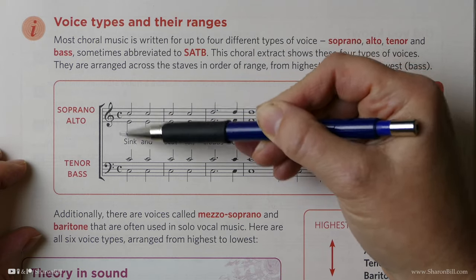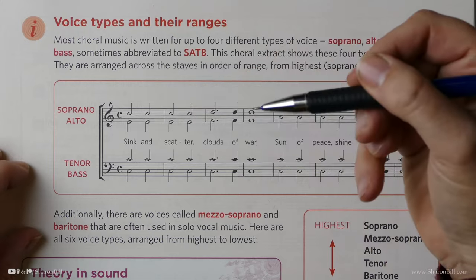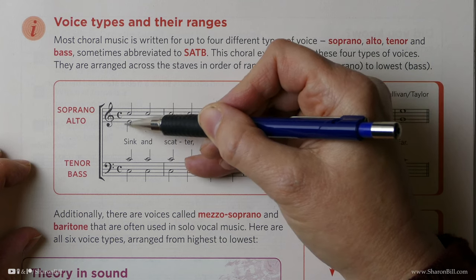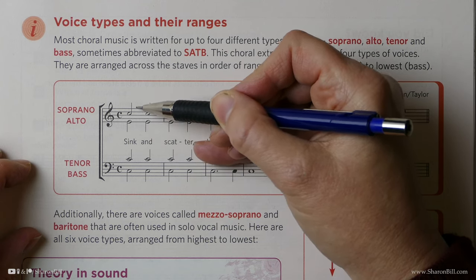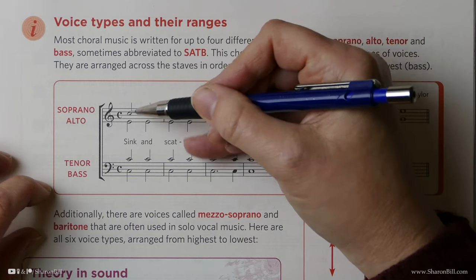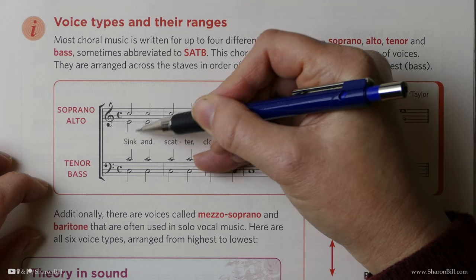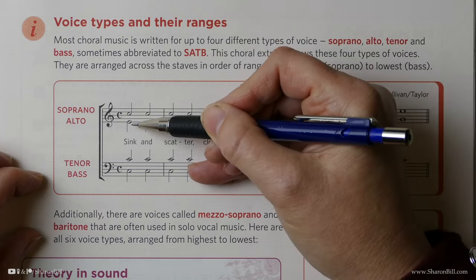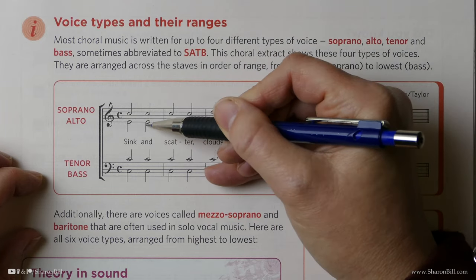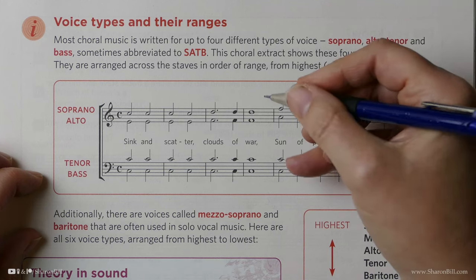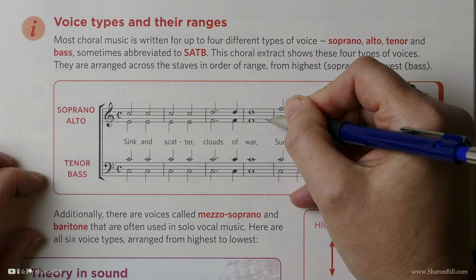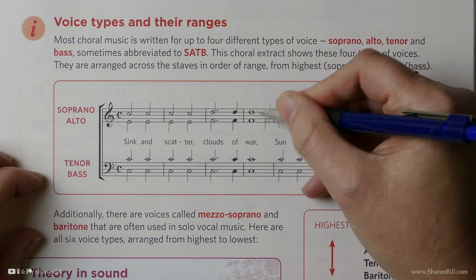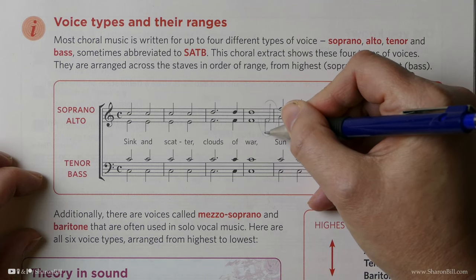And if you notice, the rules of stems is now broken, because the usual rule is that once a note is above the middle line, the stem should go down, and once it's below the middle line, the stem should go up. However, that changes, because the soprano, because they're sharing the stave with the alto, soprano notes all have stems going upwards, and alto is all stems going downwards. And sometimes, just out of interest, you can have a note where perhaps they would share, and so you'd have a stem up and stem down, so it shows that it's both soprano and alto voice.